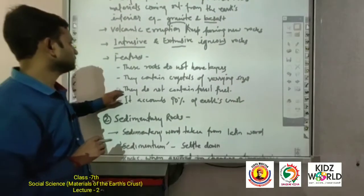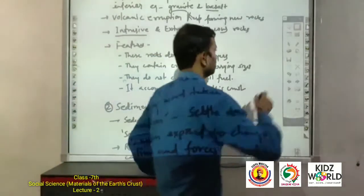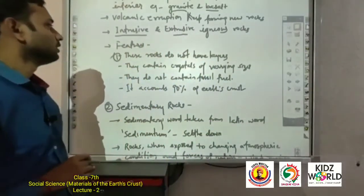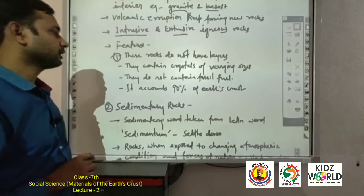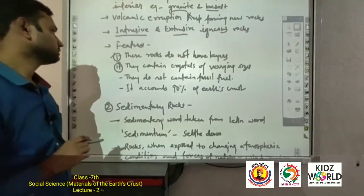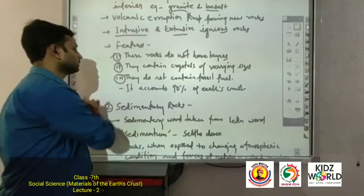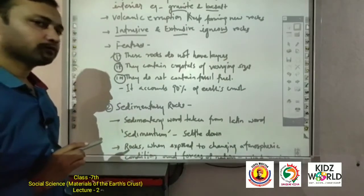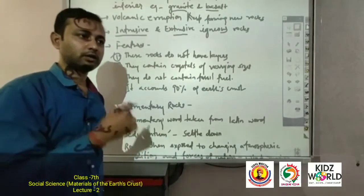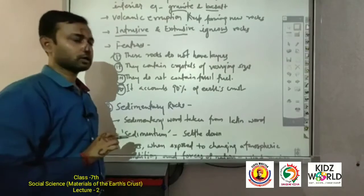The features of igneous rocks: these rocks do not have layers. They contain crystals of varying size. They do not contain fossil fuels — no fossil fuels are found in them. Igneous rocks account for 90% of the earth's crust.